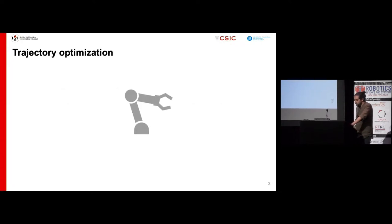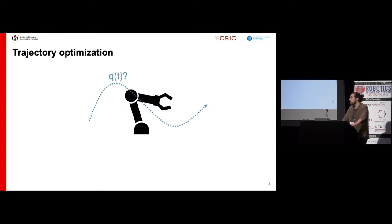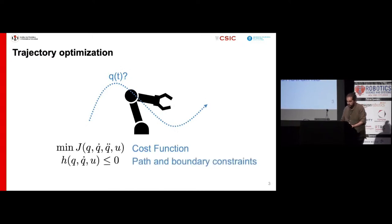To start with, let us recall the trajectory optimization problem. Suppose we have a robot for which we want to find an optimal trajectory Q of t minimizing a given cost function. This trajectory must fulfill some path and boundary constraints and satisfy the dynamics equation of the robot.